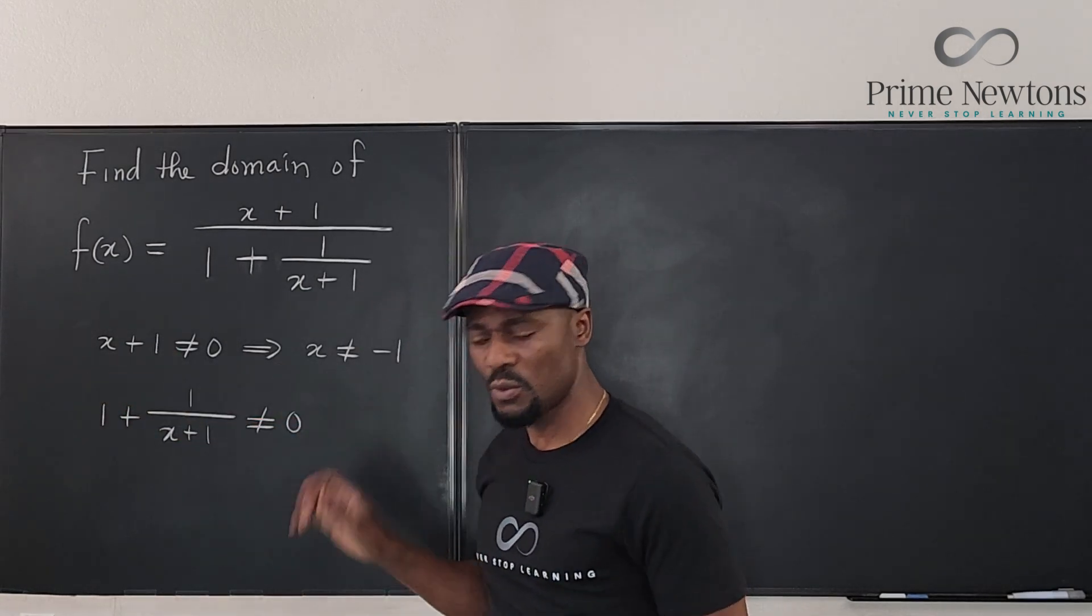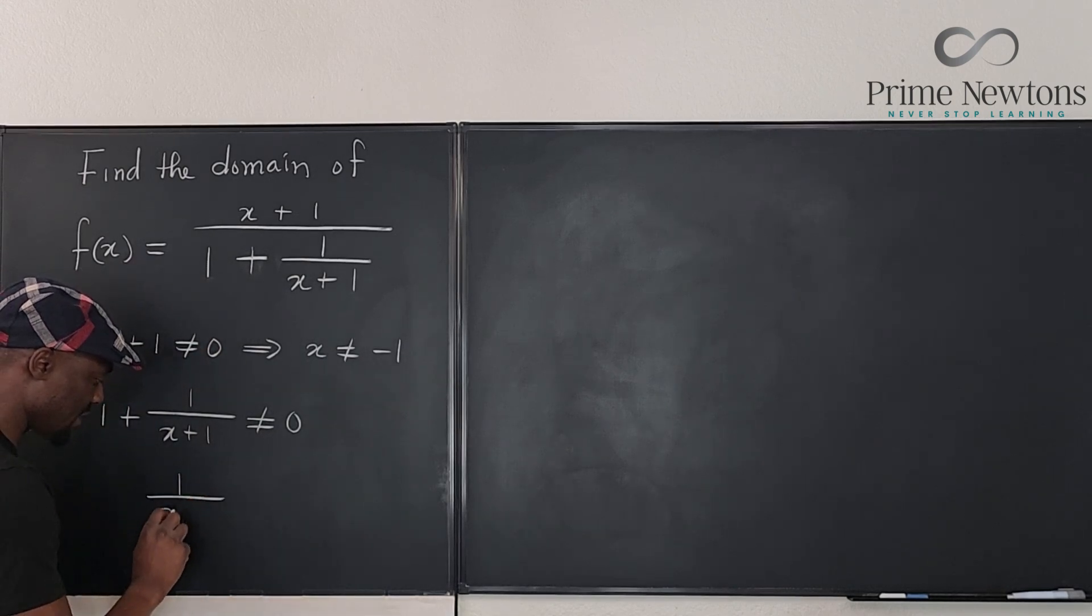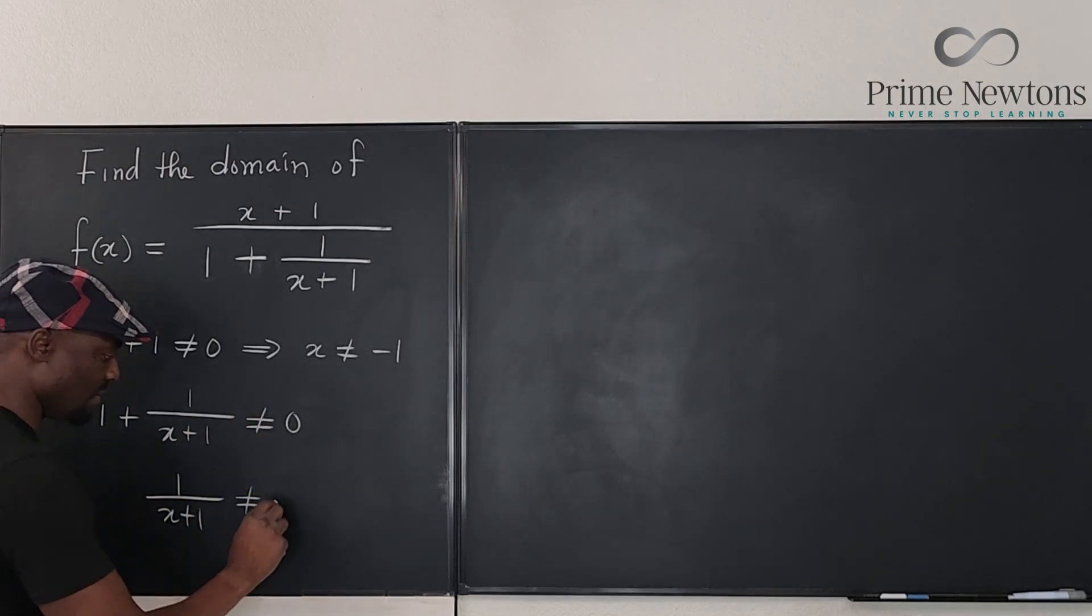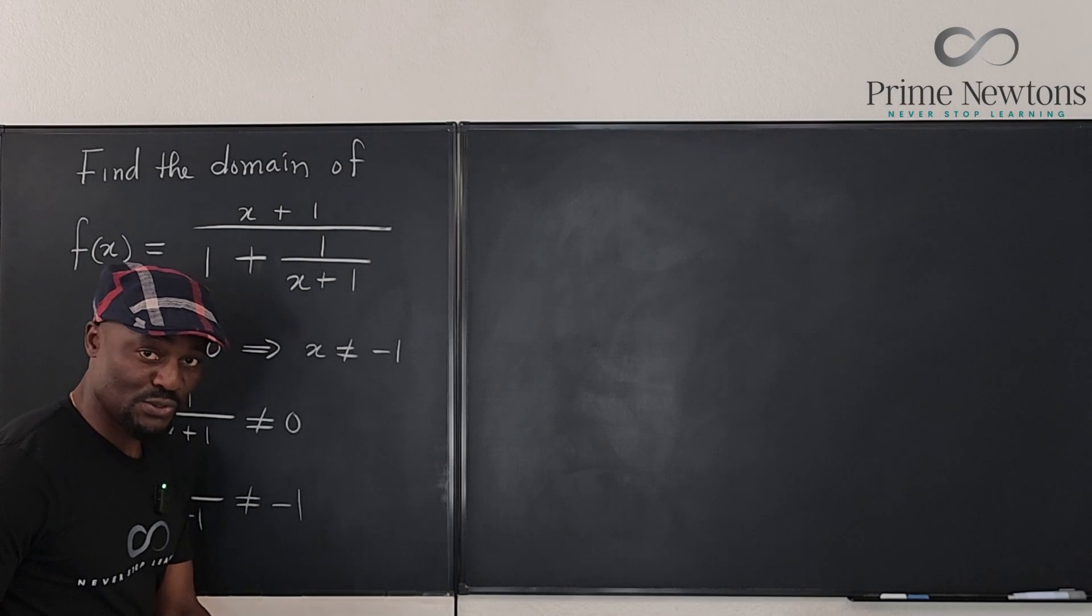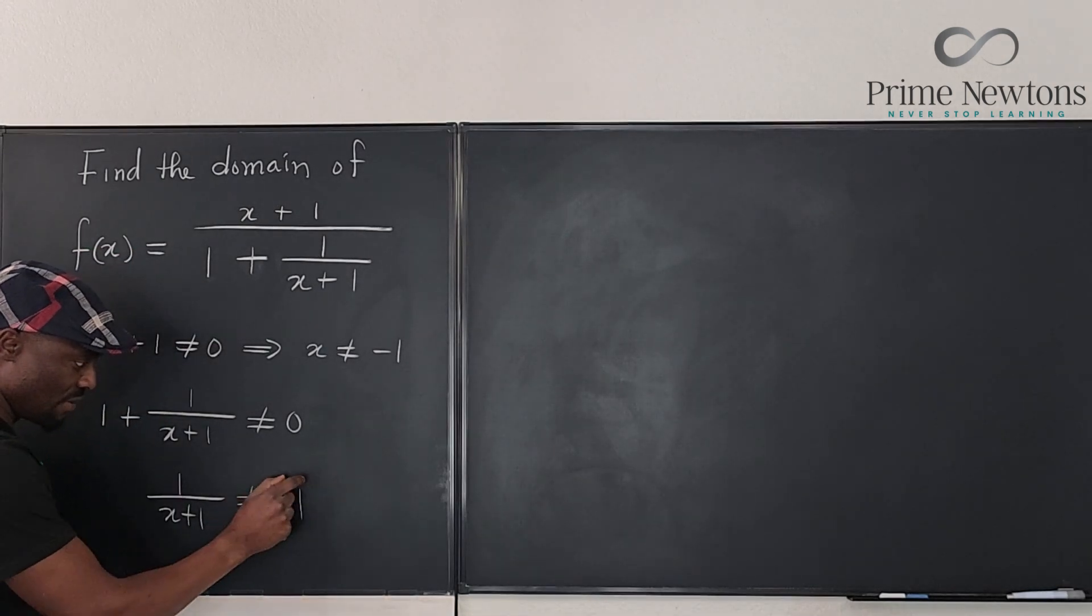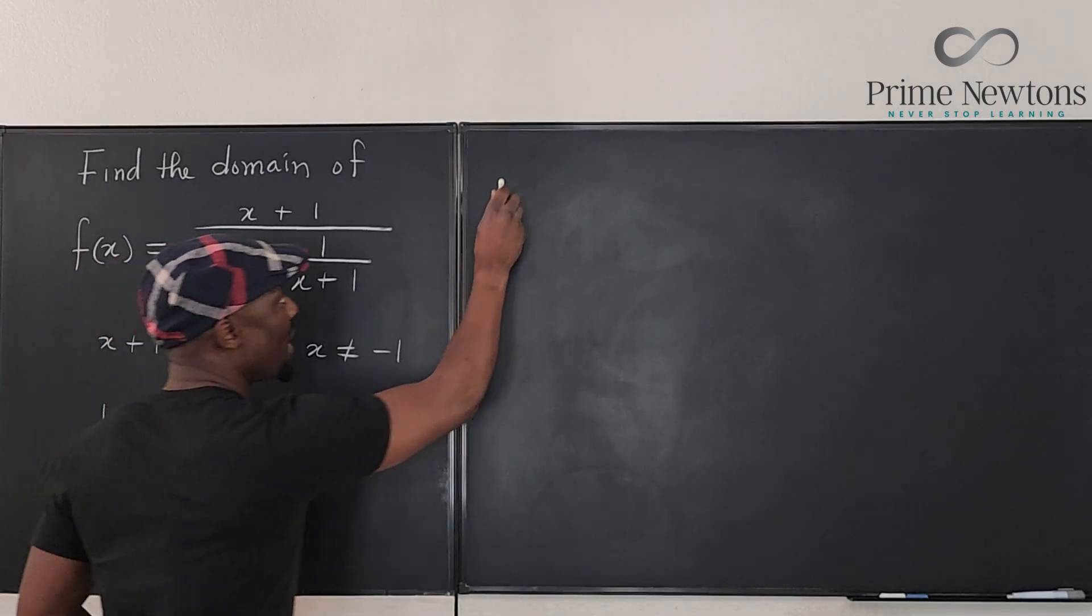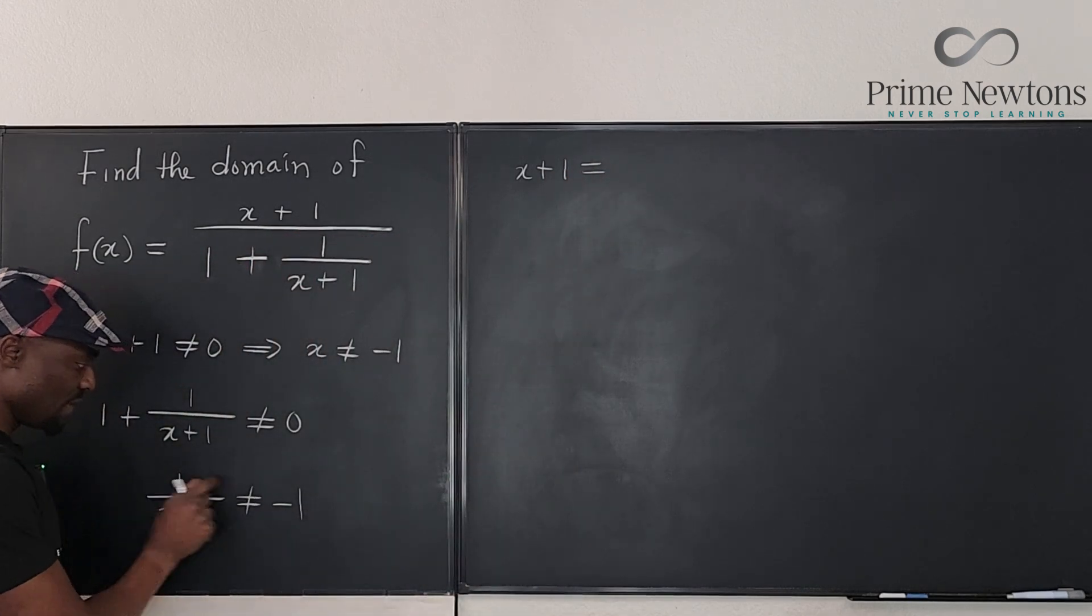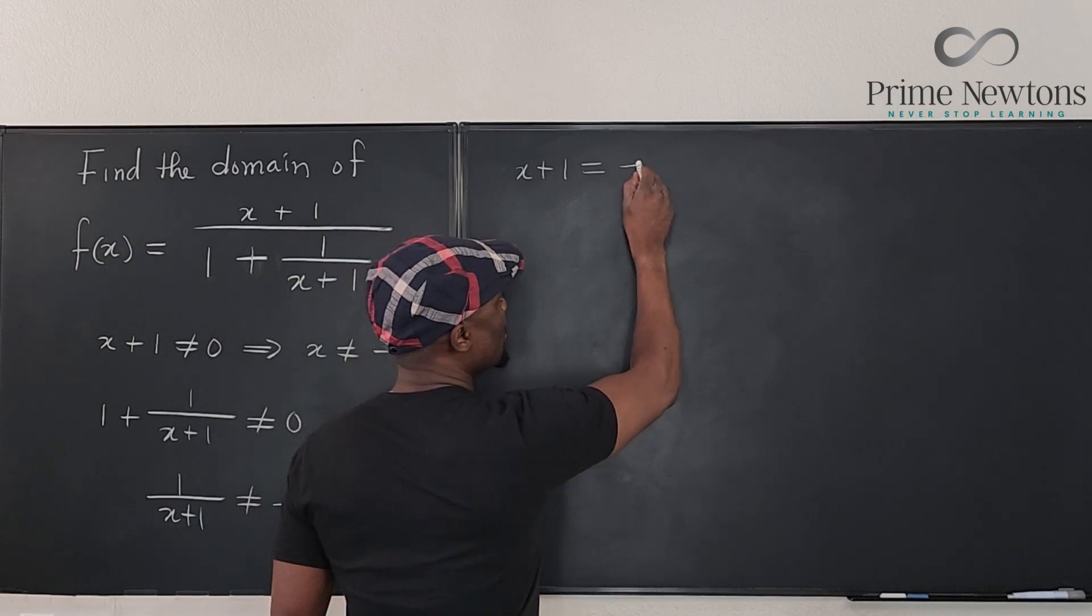What do we do? We can move this one over to this side and say that 1 over x plus 1 is not equal to, when this one moves over, it becomes minus 1. Now, this is a trick I always use to solve rational equations. I just move this one on top of this and that frees this guy to become x plus 1. So I have x plus 1 is equal to, when you move this one over here, it's 1 over minus 1. 1 over minus 1 is just minus 1.